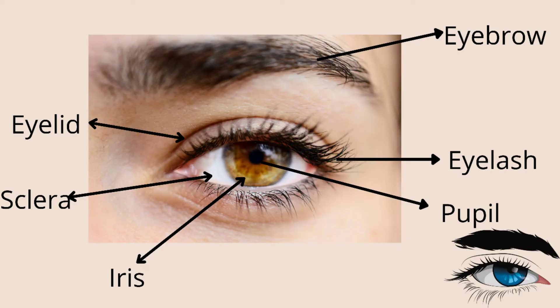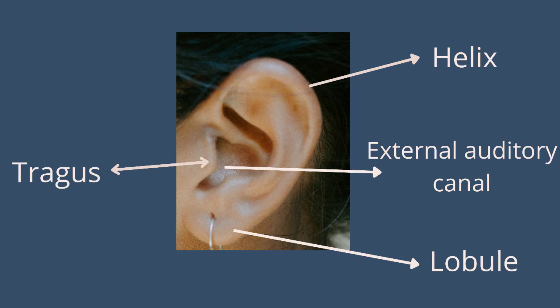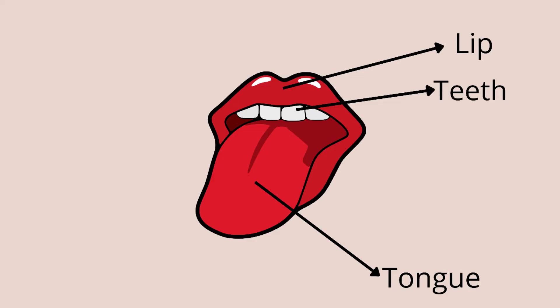Parts of eyes: eyelid, eyebrow, sclera, iris, eyelash, pupil. These are the parts of the eyes. Parts of nose: dorsum, tip, nostrils, septum, wing, alar. Parts of ears: helix, external auditory canal, lobule, tragus. These are the parts of the ears.